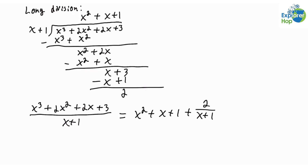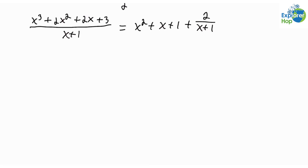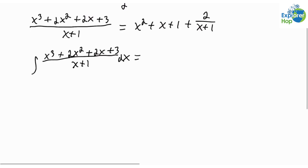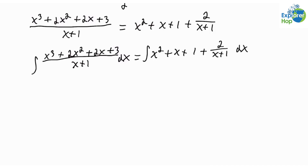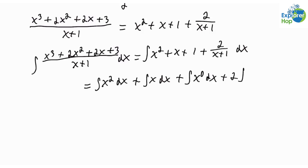Now we can go ahead and rewrite the integrand. So the integral of x cubed plus 2x squared plus 2x plus 3 over x plus 1 dx is equal to the integral of x squared plus x plus 1 plus 2 times the integral of 1 over x plus 1.